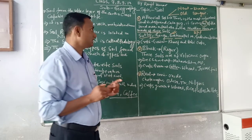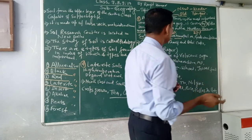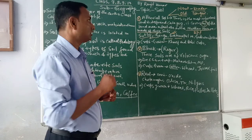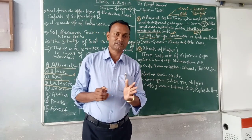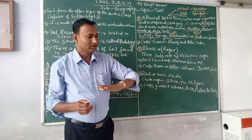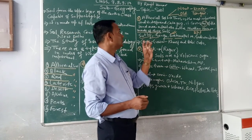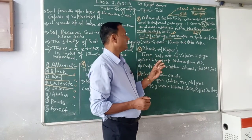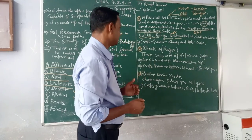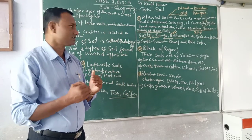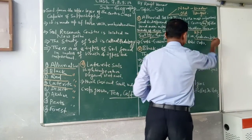There are two types of Alluvial soil. The first is new Alluvial soil, called Khadar, and the second is old Alluvial soil, called Bhangar. When floodwaters deposit fresh soil on the ground, that is called new Alluvial soil or Khadar. The northern plains have the largest area of Alluvial soil in India.